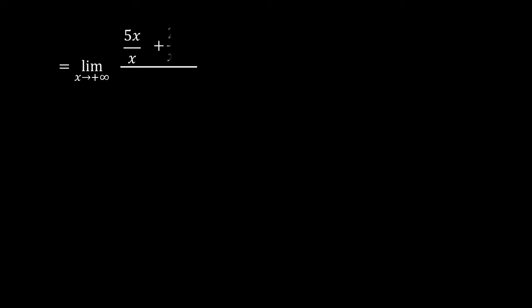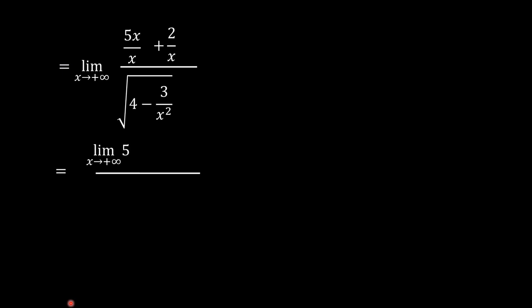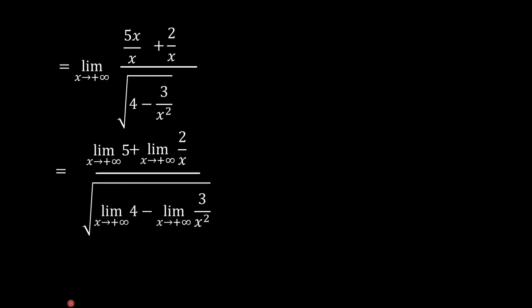This is now equal to the limit of 5x over x plus 2 over x, divided by the square root of 4 minus 3 over x squared, as x approaches positive infinity. Since 5x over x equals 5, we can now find the limit of the numerator and the denominator separately: the limit of 5 plus the limit of 2 over x as x approaches positive infinity, divided by the square root of the limit of 4 minus the limit of 3 over x squared, as x approaches positive infinity.